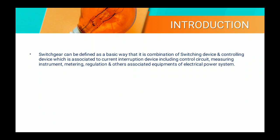So what is switchgear? Switchgear can be defined as a combination of switching device and controlling device, which is associated to current interruption devices including control circuit, measuring instrument, metering, regulation and other associated equipments of electrical power system. That means switchgear is a branch of electrical devices. It consists of some combination of switching devices, controlling circuit or controlling device, and measuring instrument.